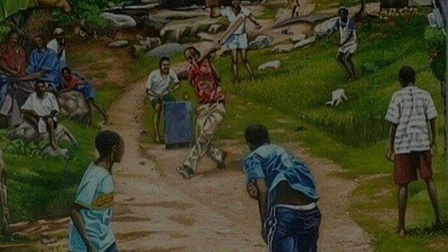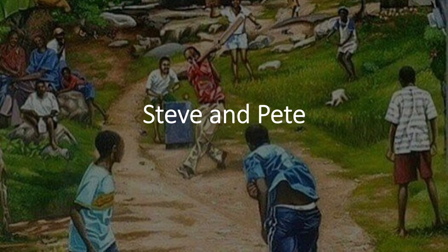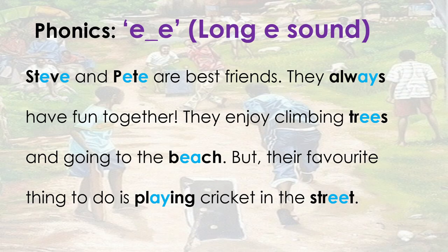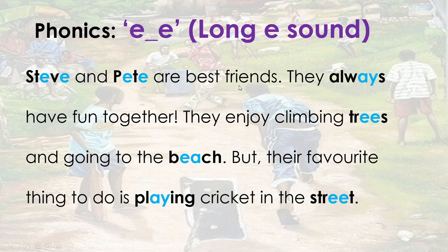Now let's look at our passage. What do you think we are going to read about today? The name of our passage is actually Steve and Pete. This background picture of a cricket in the road has something to do with the passage. I'm going to point out some words you may not be familiar with — say it, spell it, and say it again. The words are: best, friends, together, enjoy, and favorite. Pause the video and give the passage Steve and Pete a try.